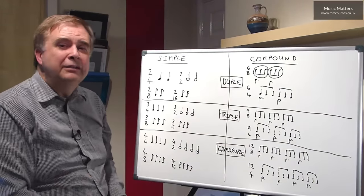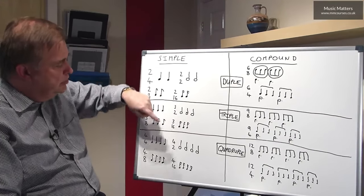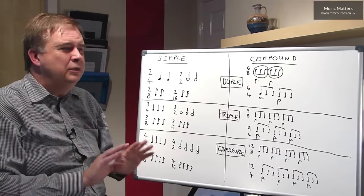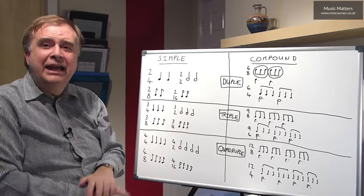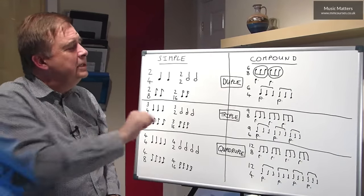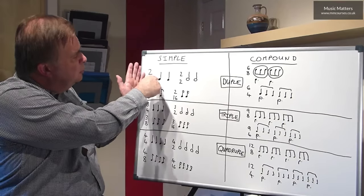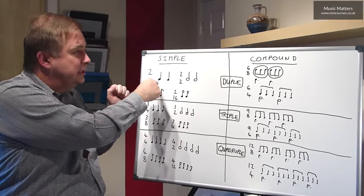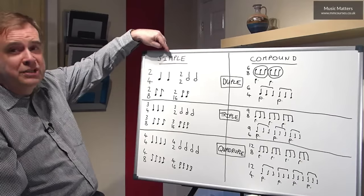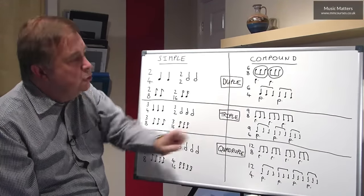Now you might notice one or two things as we've been unfolding this table. You might notice that in simple time all the beats are not dotted, and you might notice that in compound time all the beats are dotted. So that's a useful clue. If you're not quite sure what a time signature is and you're asked to look at a piece of music and say what the time signature is, you might just look at how the notes are beamed together. If they look as if they're in groups of three, it's probably telling you that you're in compound time. But if it's in groups of two or four, it's more likely to be simple time. And it's quite easy to remember that simple times have two, three, or four at the top, and compound times have six, nine, or twelve at the top.